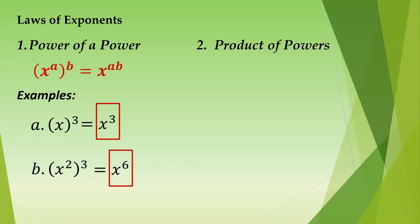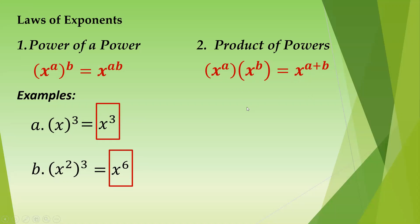Number 2: we have product of powers. This is x raised to a, times x raised to b — same variables multiplied with different powers. What you do is x raised to a plus b. This is a common error that always gets mixed up with the previous law. Here you add the exponents; the previous one you multiply.